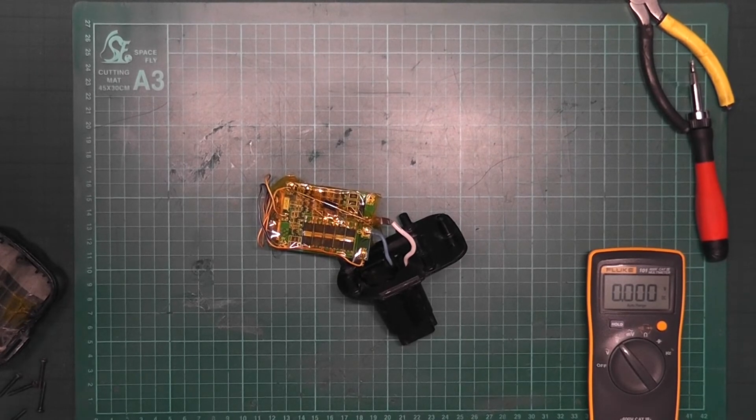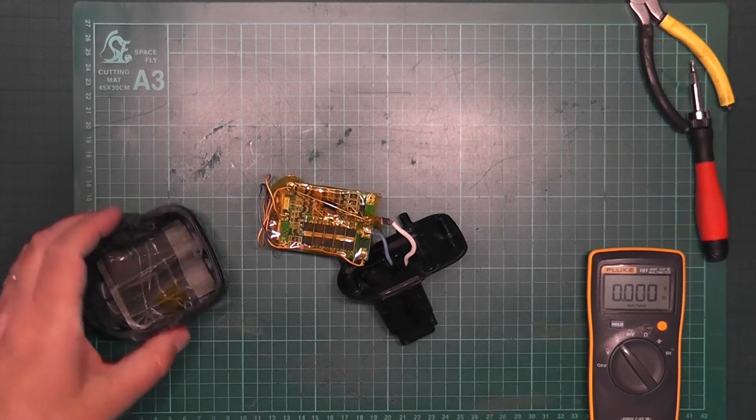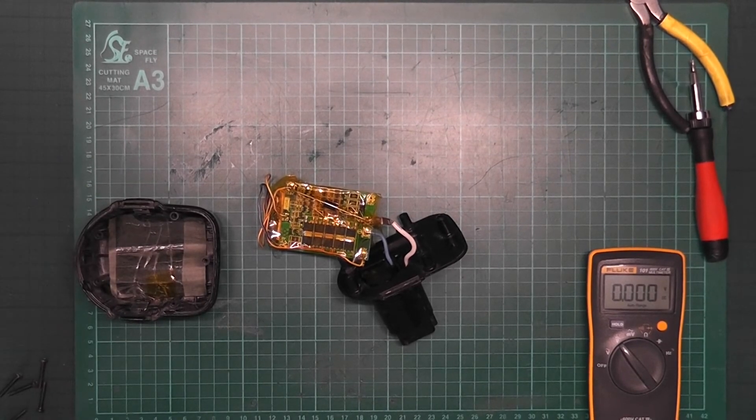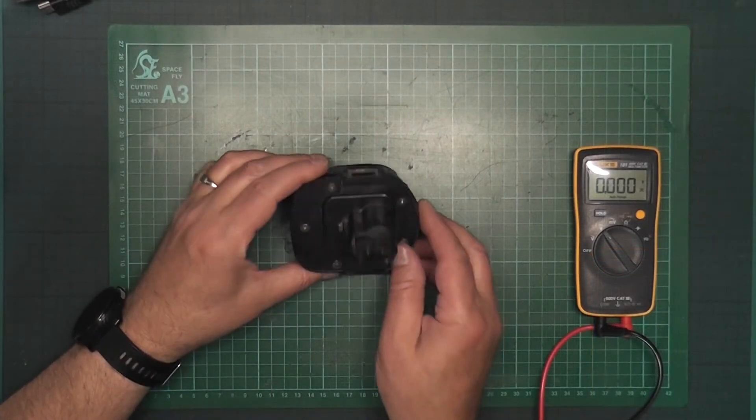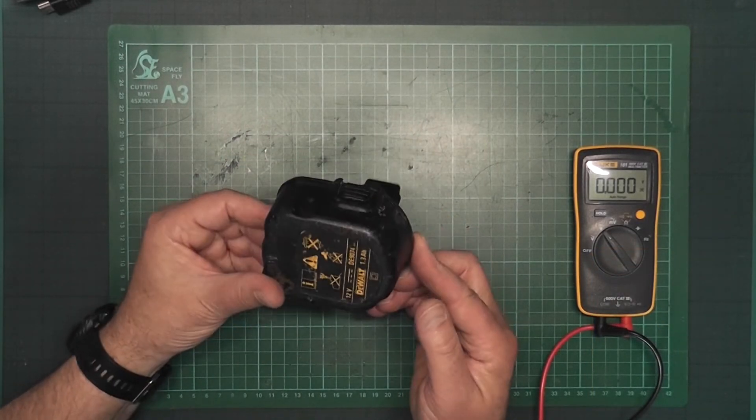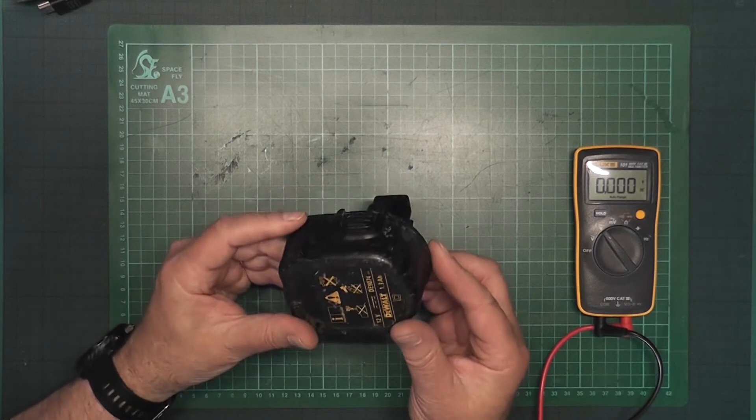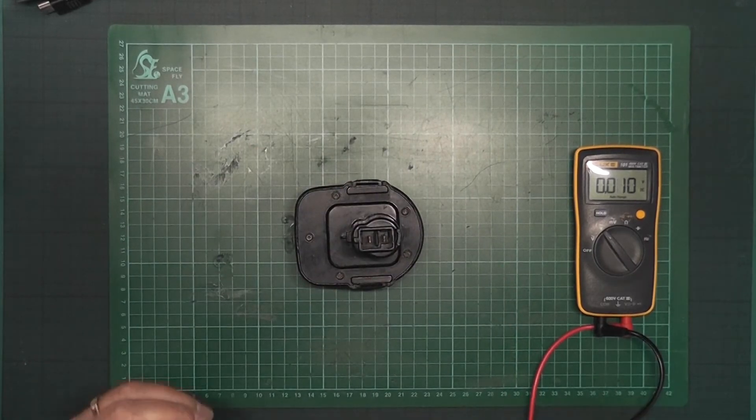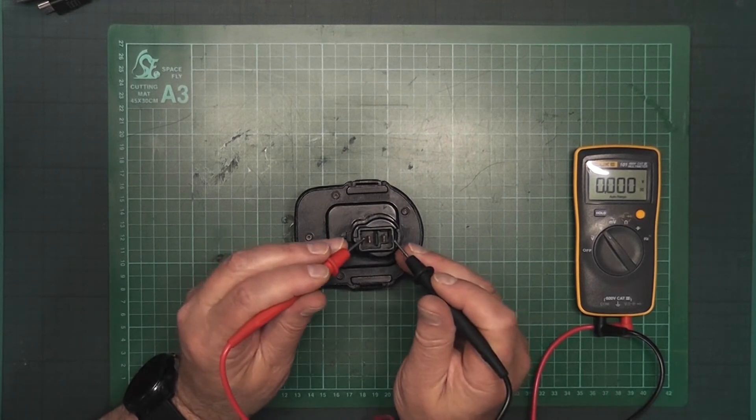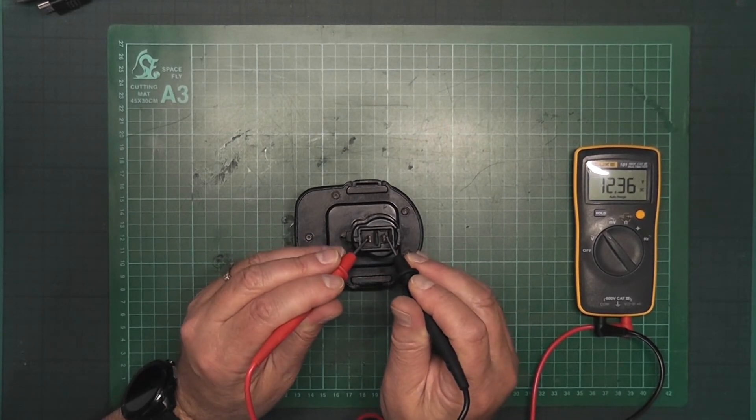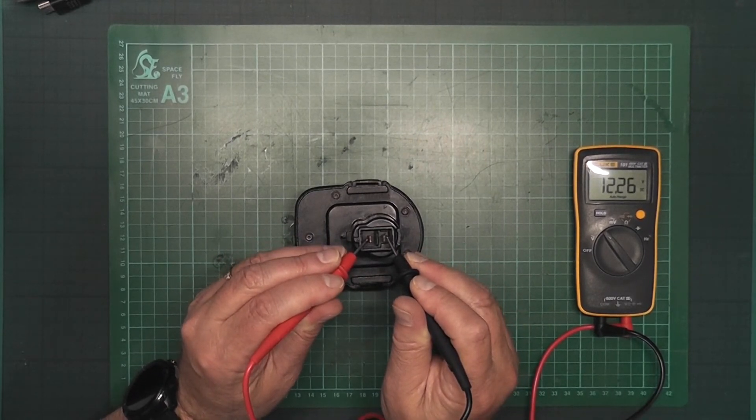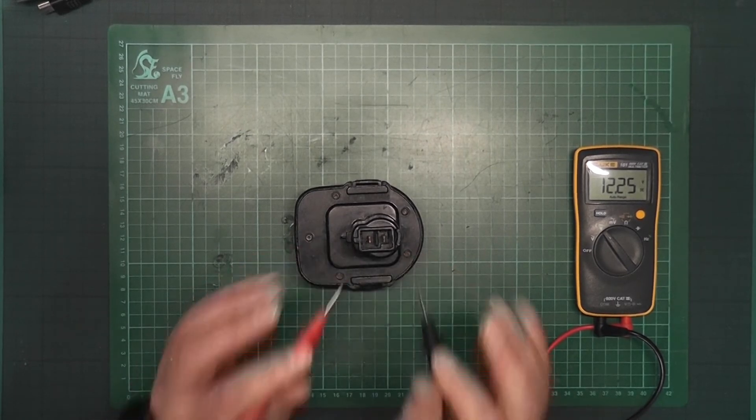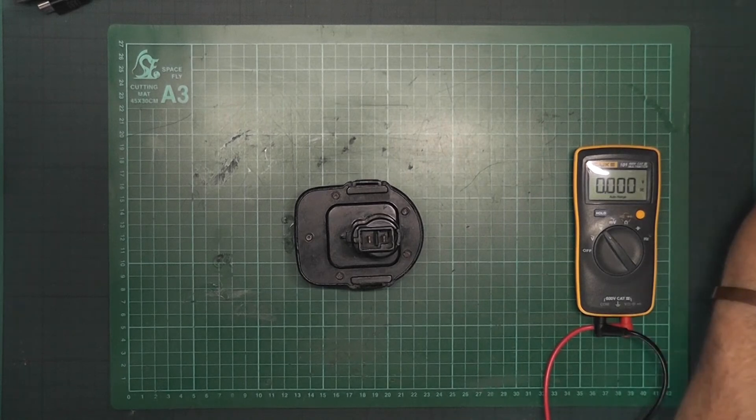And the next step now is to reassemble it into the container, the charger pack, and then we can test it. Now after a bit of wiggling about, I've got it back into place. Let's just test and see if we have something. And there we go, 12.25 volts.